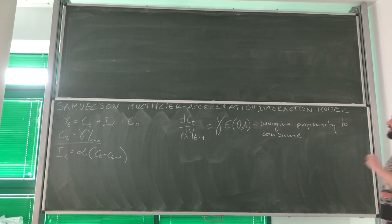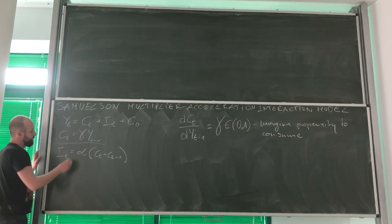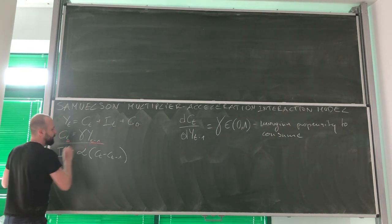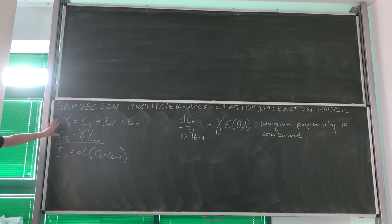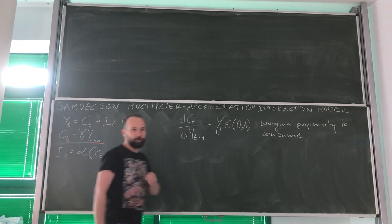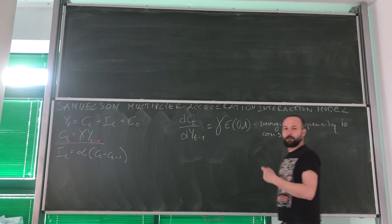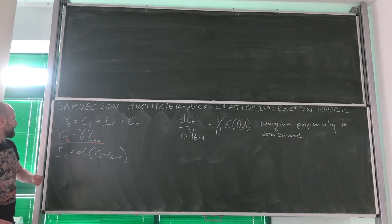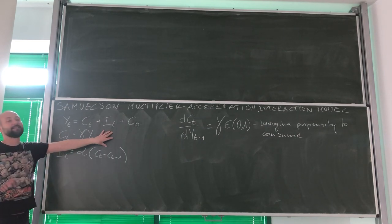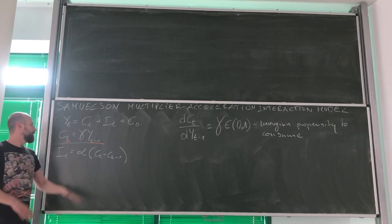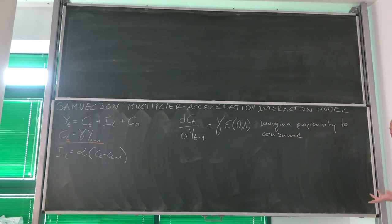How much out of one additional dollar does a household spend on consumption? However, let's notice a very interesting thing here. Here, we've got T, and here, we've got T minus 1. This is the first of the two ways in which Samuelson has actually introduced dynamics into the Keynesian model. Now we simply assume that the customers do not spend their income contemporaneously. They spend based on their income in the previous period.